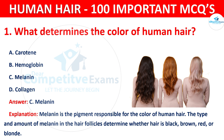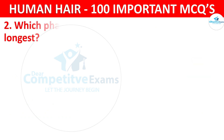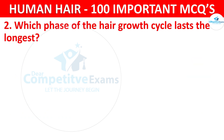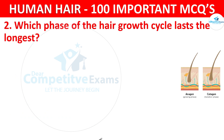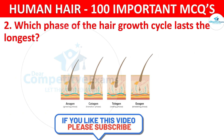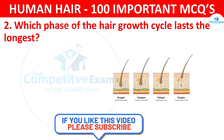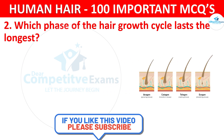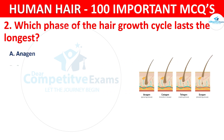Question number 2. Which phase of the hair growth cycle lasts the longest? Your options are anagen, catagen, telogen, or exogen.